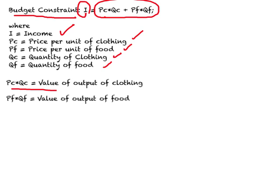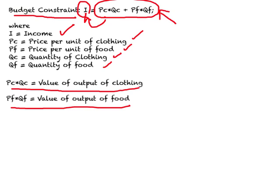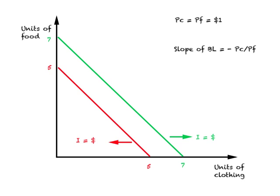PC times QC will be the value of output of clothing, and PF times QF will be the value of output of food. Since this country produces only two goods, the total value of output is the sum of the value of output in the clothing industry plus the value of output in the food industry. In terms of the budget constraint, this must equal income — whatever is the value of output produced in an economy, that equals income, and that is how we determine the income of a country.